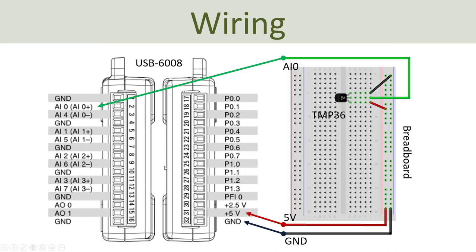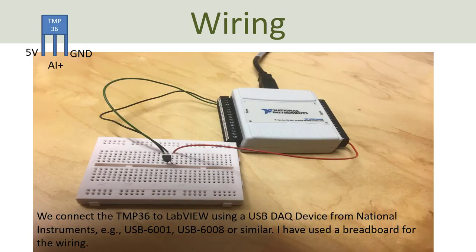Here you see the wiring. We put the temperature sensor on the breadboard and wire it using three wires: one to five volts, one to ground, and the pin in the middle goes to one of the analog input channels of the DAQ device. Here we see the physical channel — my temperature sensor and DAQ device are connected together and connected to my computer using a USB cable.